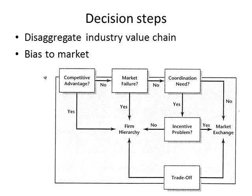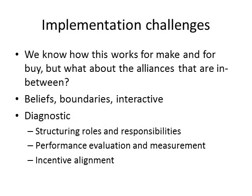Zara is a company that is much more vertically integrated compared to its competitors. Part of the reason is that Zara is highly responsive to changes in fashion, so it's a coordination need that dominates — that's why they have more company-owned stores and factories. This trade-off between needing tight coordination versus needing stronger incentives drives many make-versus-buy decisions, and walking through this framework helps explain why firms differ so much in the choices they make.